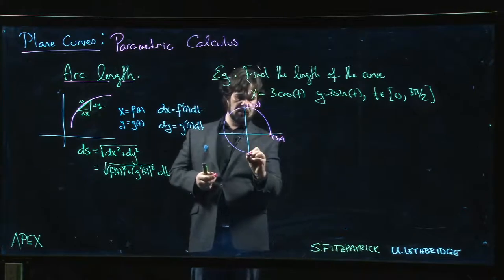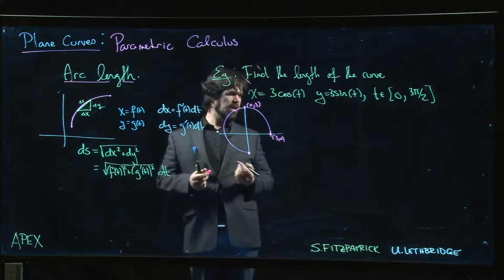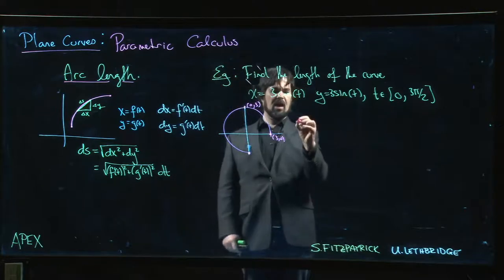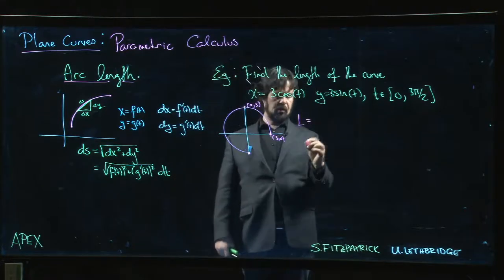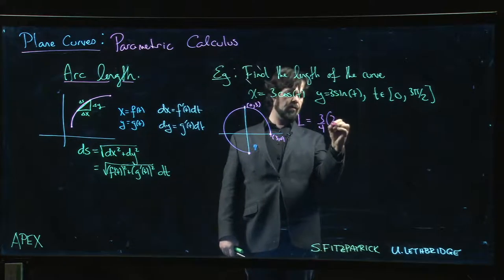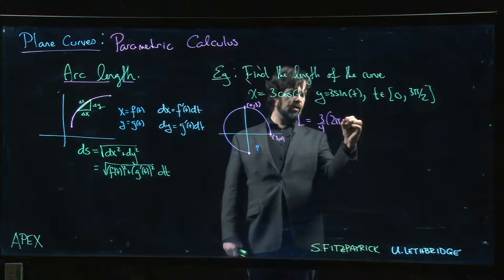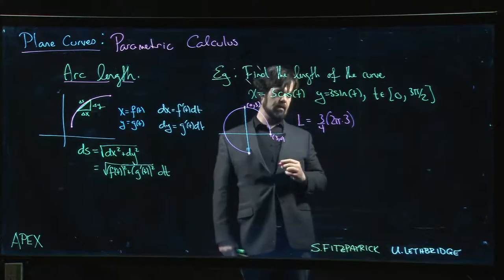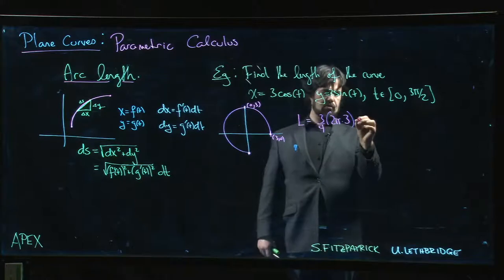Well, I guess we don't need calculus to answer this, right? The length is going to be 3 quarters of the circumference, which is 2πr, and r is 3, so I should get 9π/2.